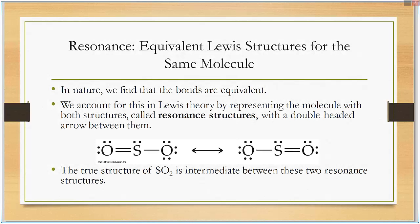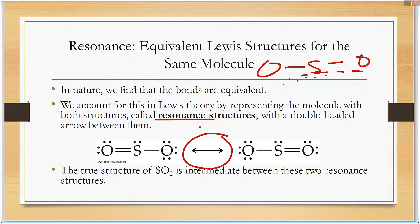In nature, we find that the bonds are equivalent. That's why I said that they're actually being shared. We represent that with a dashed line between them. We account for this in Lewis theory by representing the molecule with both structures called resonance structures with a double headed arrow between them. The true structure of SO2 is intermediate between the two resonance structures. So which one does it do? Does both. The double bond could be on this side or the double bond could be on that side for resonance structures.